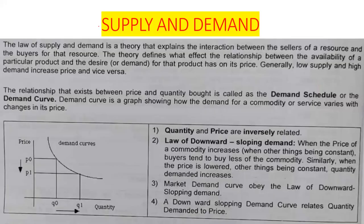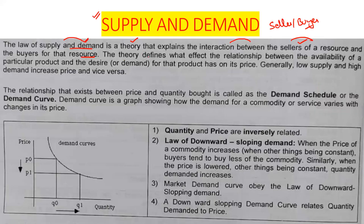Let's start with chapter number two, that is supply and demand. The law of supply and demand is basically a theory that explains the interaction between the seller of a resource and the buyer. The theory defines the relationship between the ability of a particular product and the desire or demand for that product on its price.